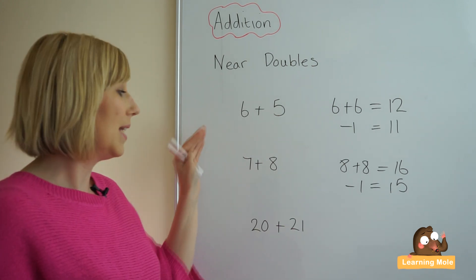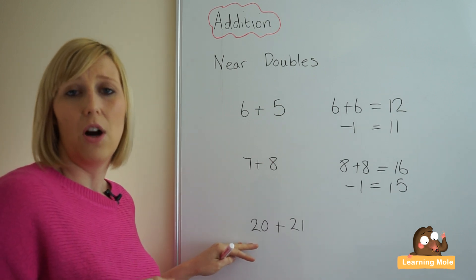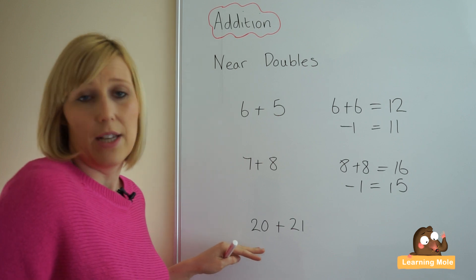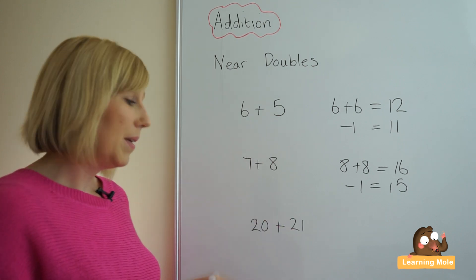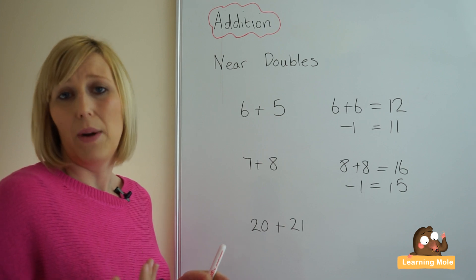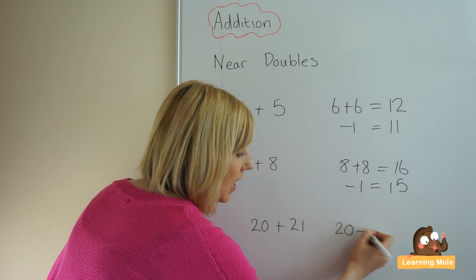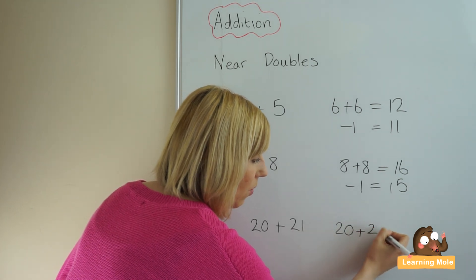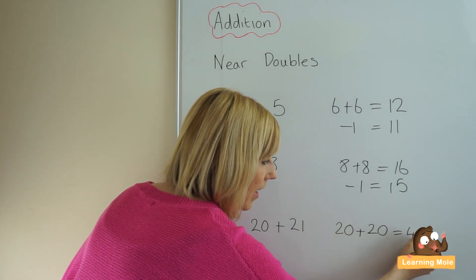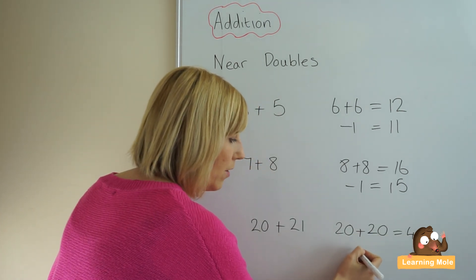Even taking it further from our simple single digit calculations into double digit calculations using two digit numbers. We already know that double 2 is 4, so double 20 is 40. With 20 plus 21, we adjust slightly differently—since we've taken one away, we add one on.